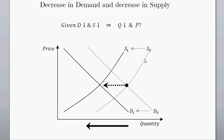With S sub nought and D sub nought at the initial equilibrium, and given a decrease in both the demand and the supply curve — a shift in for both — we have a new equilibrium. Where price ends up could be higher, lower, or identical. However, we definitely know that quantity is going to go down.